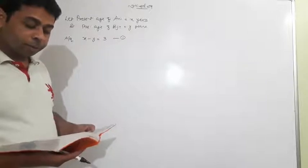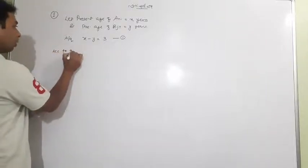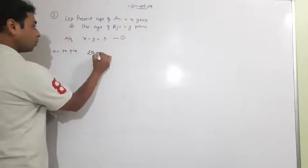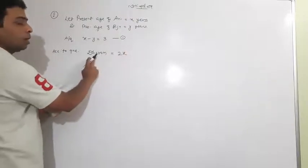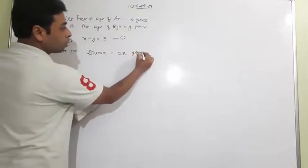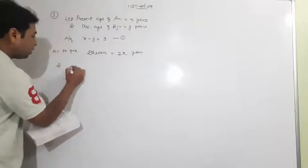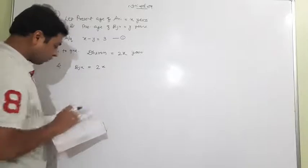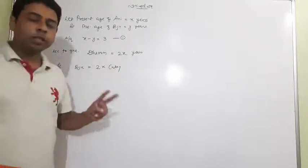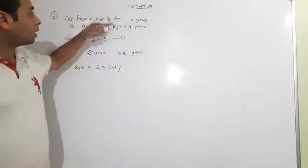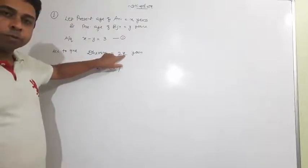The next condition says Ani's father Dharam is twice as old as Annie. A new person is included here. Ani's father Dharam's age is equal to 2X, meaning Dharam is 2X years old. And Biju is twice as old as his sister Cathy. So two new persons join the problem: Dharam, the father of Annie, and Cathy, the sister of Biju. According to the problem, Dharam's age is 2X.